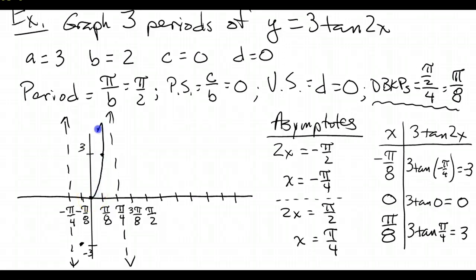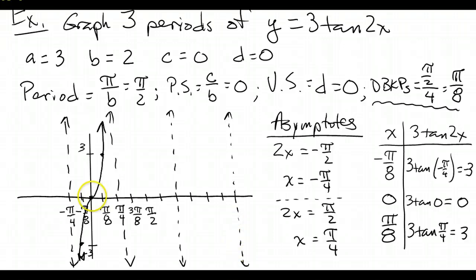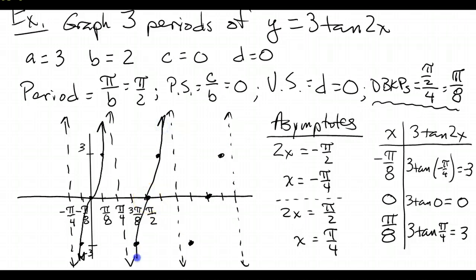Now I've got my three ordered pairs to graph: (negative pi over 8, negative 3), (0, 0), and (pi over 8, 3). I draw a nice smooth curve that approaches the asymptotes but doesn't cross or touch. This is one period of tangent. For the next two periods, between every pair of asymptotes I skip three points and draw another asymptote at the fourth mark, placing the middle point on the axis and side points at negative 3 and positive 3. Draw smooth curves approaching each asymptote, and there you have three cycles.